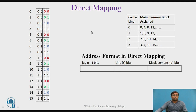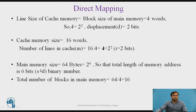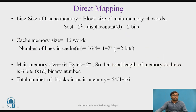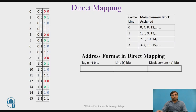For the previous example, the total length of the address is 6 bits. The 2 least significant bits identify that particular word in a block — that is the displacement. The remaining 4 MSB bits represent the block number. Since there are 16 blocks in main memory (0 to 15), 4 MSB bits identify the block number. In direct mapping, the next R bits — R equals 2 for this example — are used to identify that particular cache line.